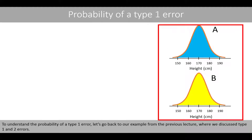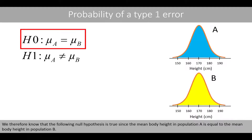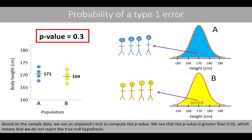To understand the probability of a type 1 error, let's go back to our example from the previous lecture where we discussed type 1 and 2 errors. In this example, the mean heights of people living in population A and B are exactly the same. We therefore know that the null hypothesis is true, since the mean body height in population A is equal to the mean body height in population B. Let's take a sample of four individuals from each population, and based on the sample data, we use an unpaired t-test to compute the p-value.